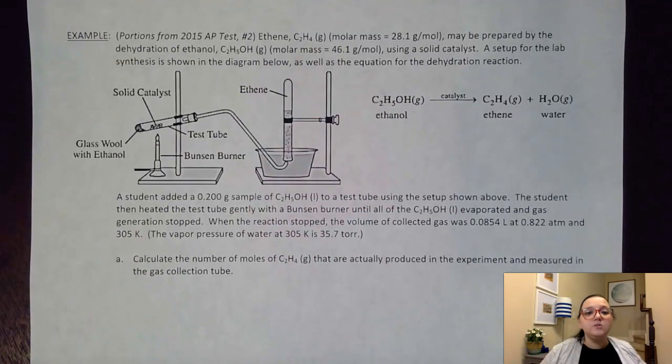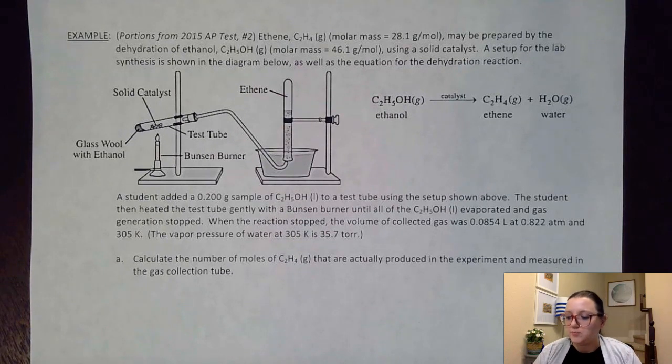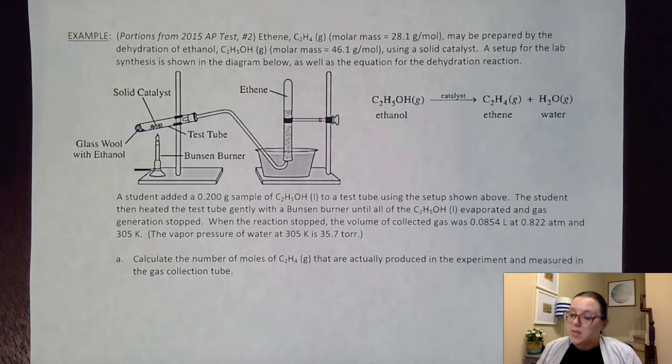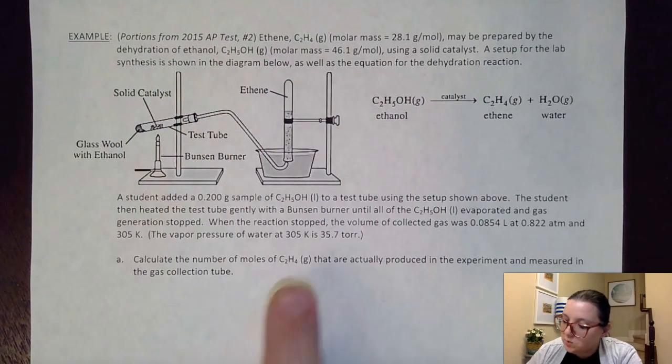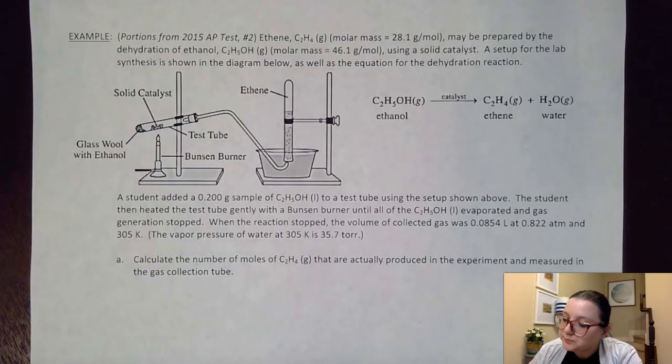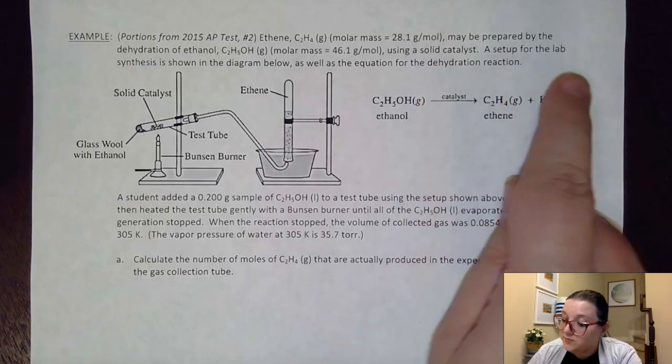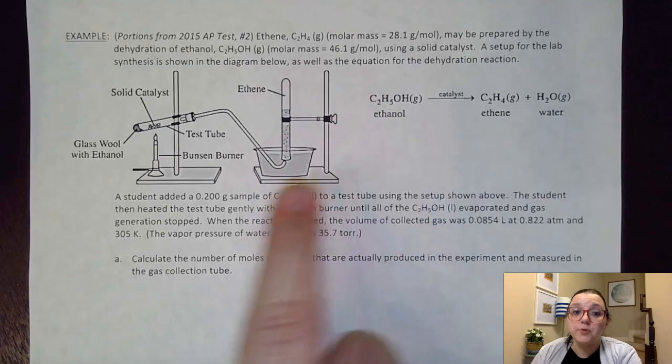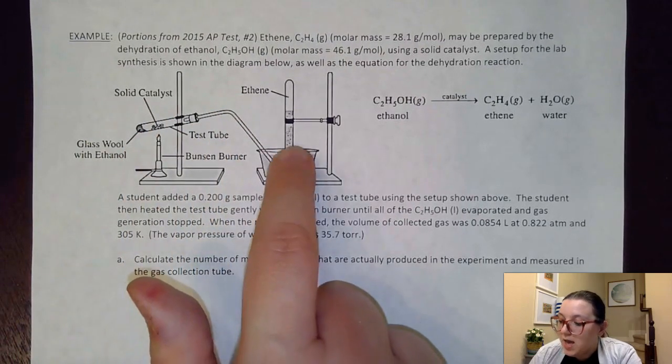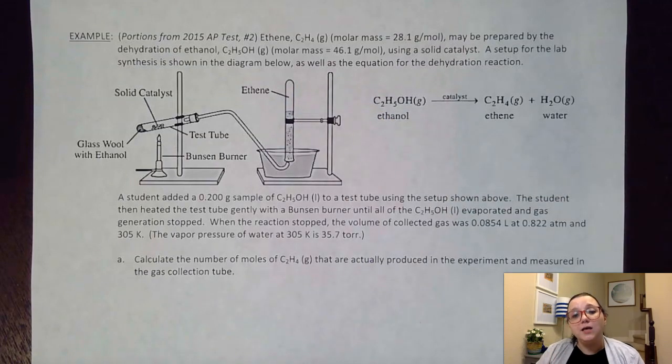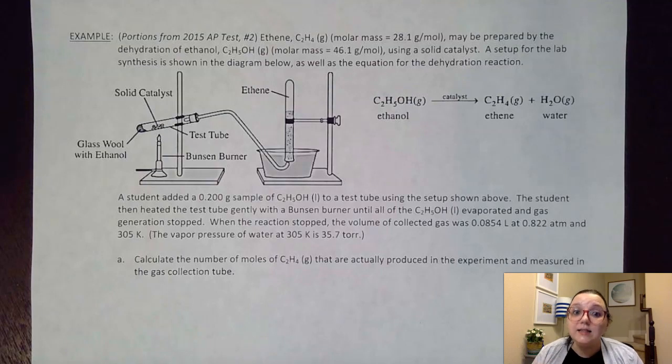All right, let's say a problem that was actually on the AP test back in 2015. Now, this problem actually had some additional components to it. So this was just part of the problem, but it'll give you an idea of the types of problems that they could ask. So you notice here they are giving us that setup of the collection of gas over water. It says that ethene C2H4 is prepared by the dehydration of ethanol, C2H5OH, which is what we have back over here in our original container. It says we're going to do that using a solid catalyst. A setup for the lab synthesis is shown right here, as well as our equation for the reaction that's occurring. And so what's going to happen is that we are making our products here. We're running that through this tube. And when we collect up here, we are collecting ethene. But don't forget, we're also unintentionally collecting a little bit of water vapor. And so we're going to have to address that in our problem.